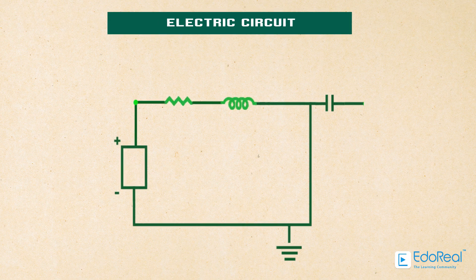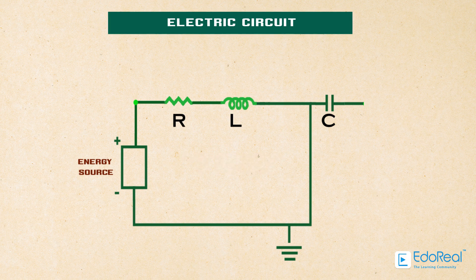An electric circuit is an interconnection of various electric elements that contains at least one closed path in which current can flow.